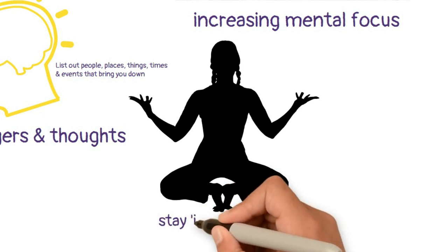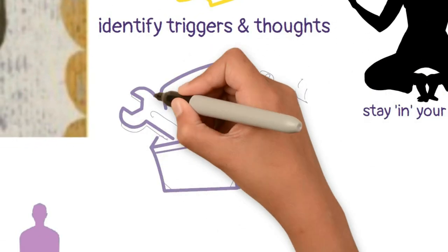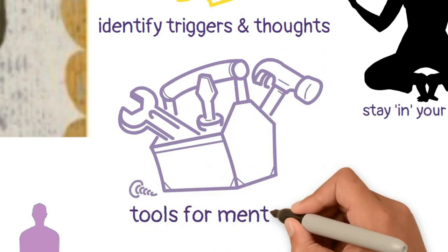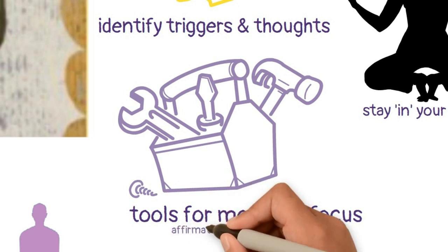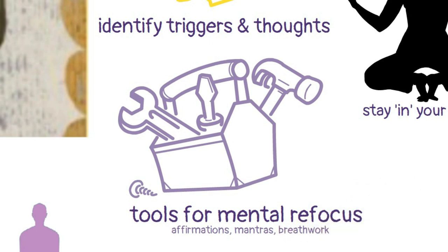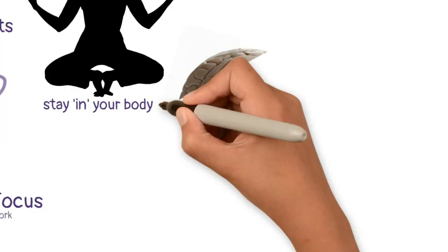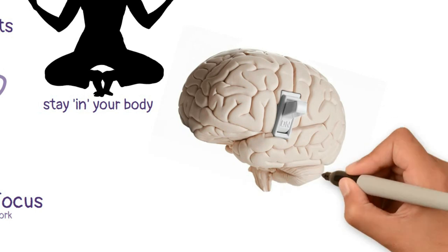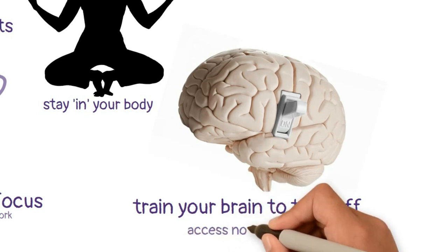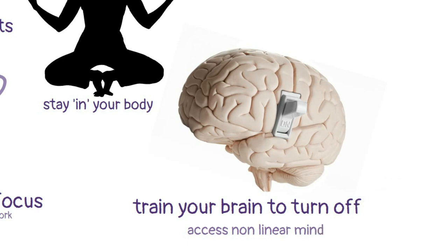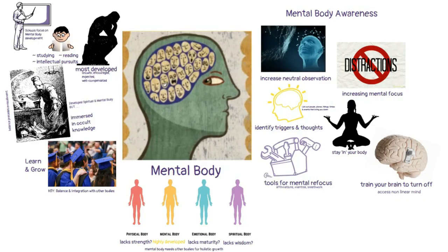Once you identify these triggers, that's literally half the work — because once you can see something, you can address it and change it. My next suggestion is to stay connected and present in your physical body as much as possible to develop mental body awareness. Also, create a set of tools that help you refocus mentally, especially when feeling weak, frustrated, or even depressed — this could be mantras or affirmations you can say out loud. Perhaps the most potent technique is to train your brain to turn off at will, because when you turn off the mental motor, you tap into that non-linear mind, which is the source of genius ideas, new thoughts, and even healing.